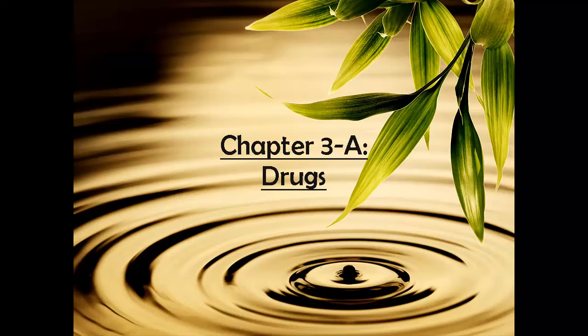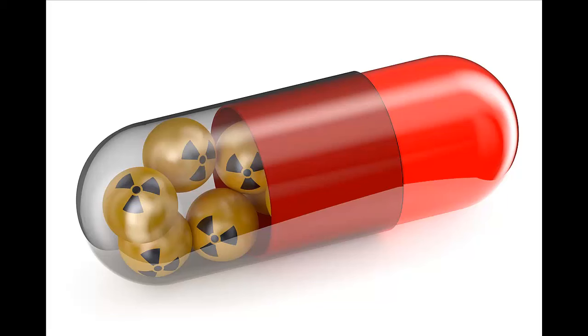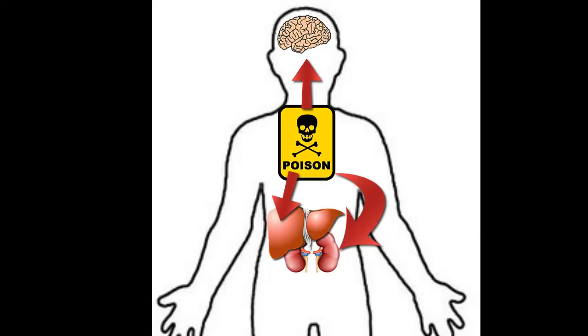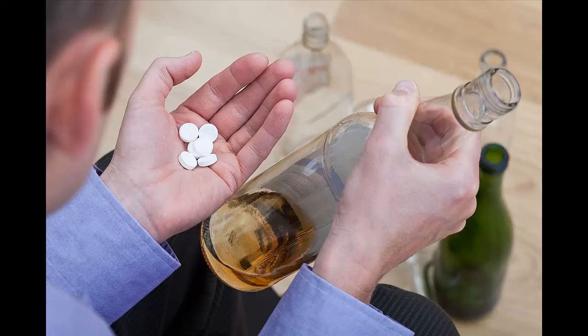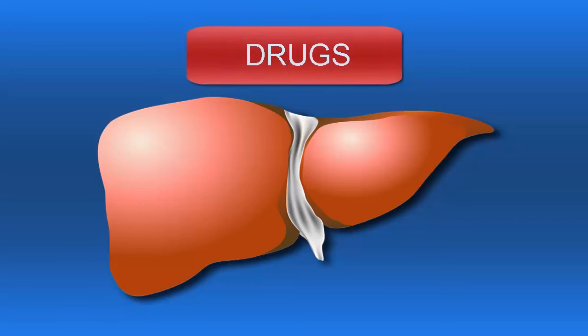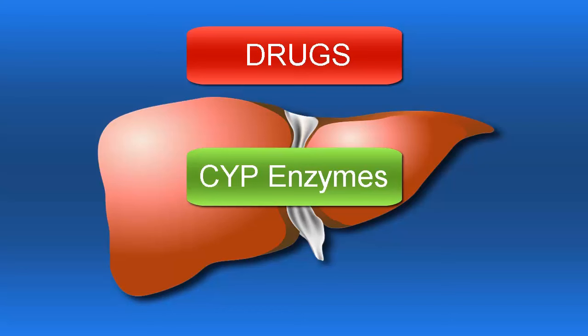Drugs. Another name for drugs is poison. Almost all drugs act by poisoning some other function of the body in order to achieve an effect. This includes recreational drugs, alcohol, and medications. Most drugs impact liver detoxification systems, the CYP enzymes, in a way that proves they are poisons.